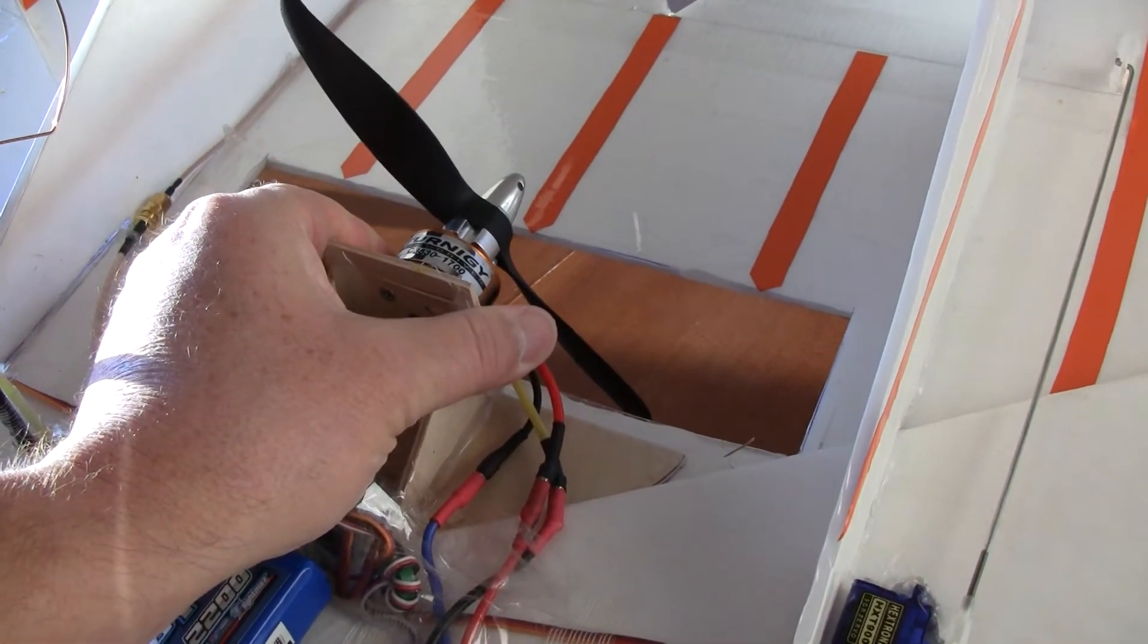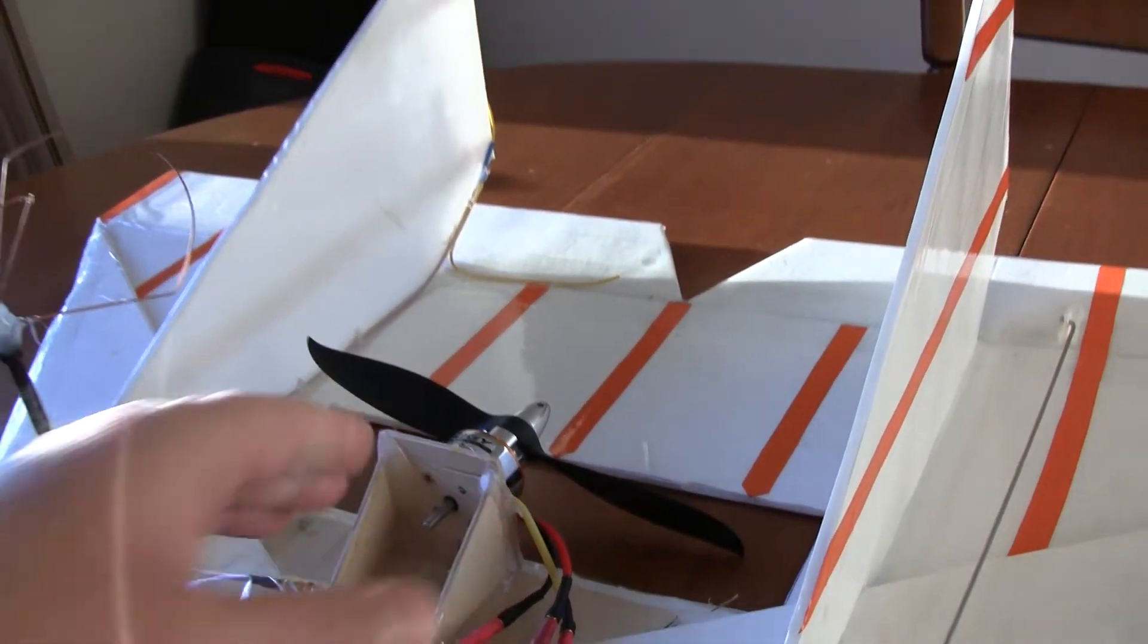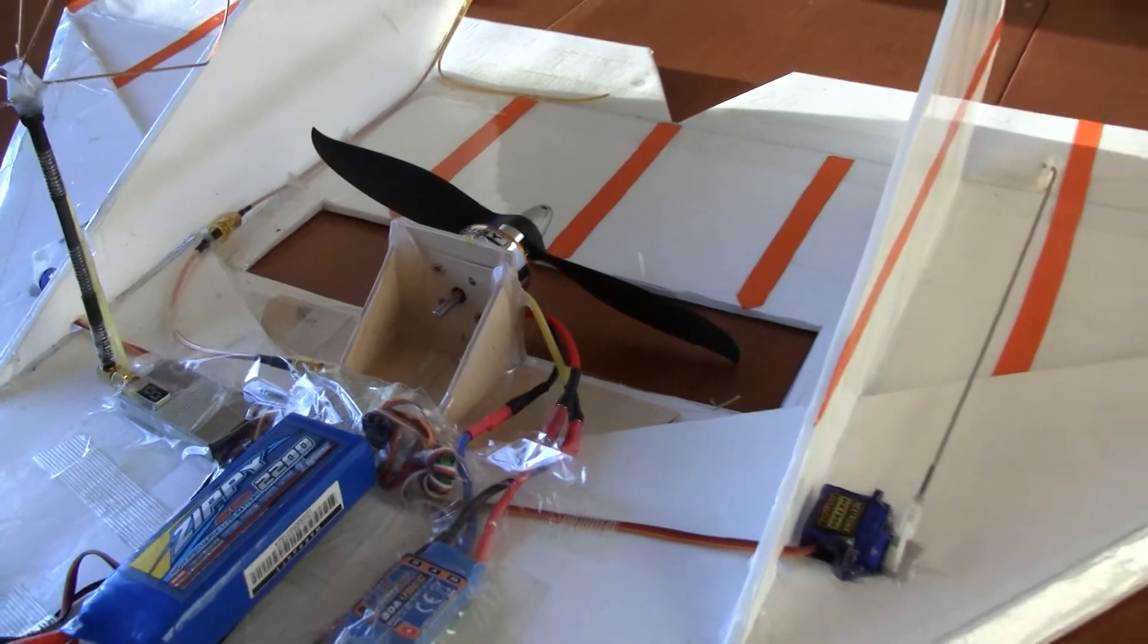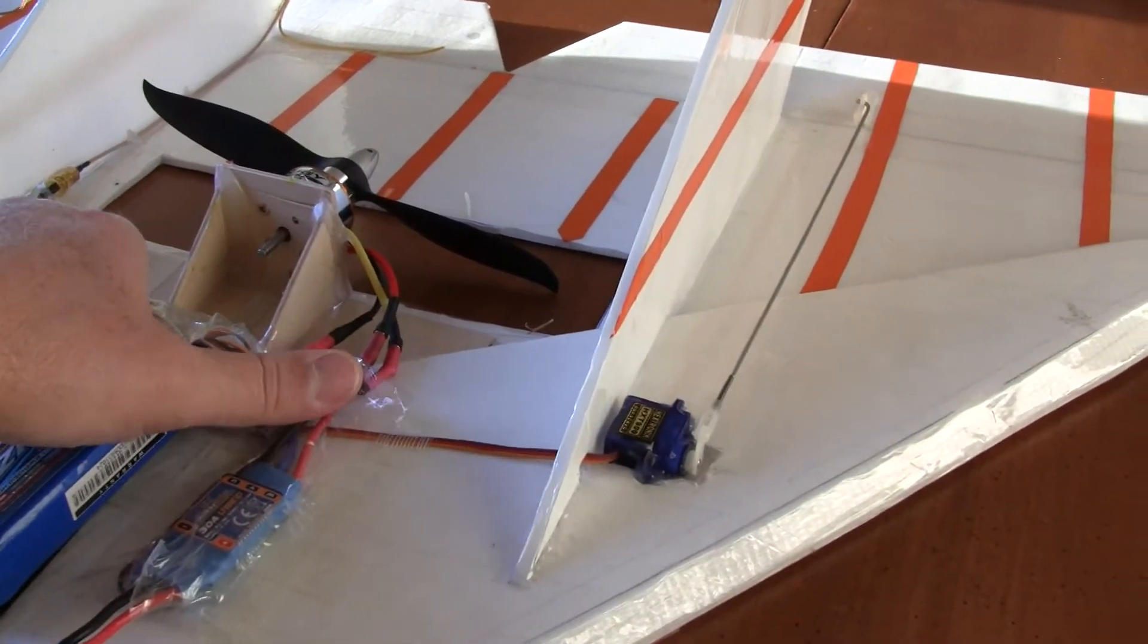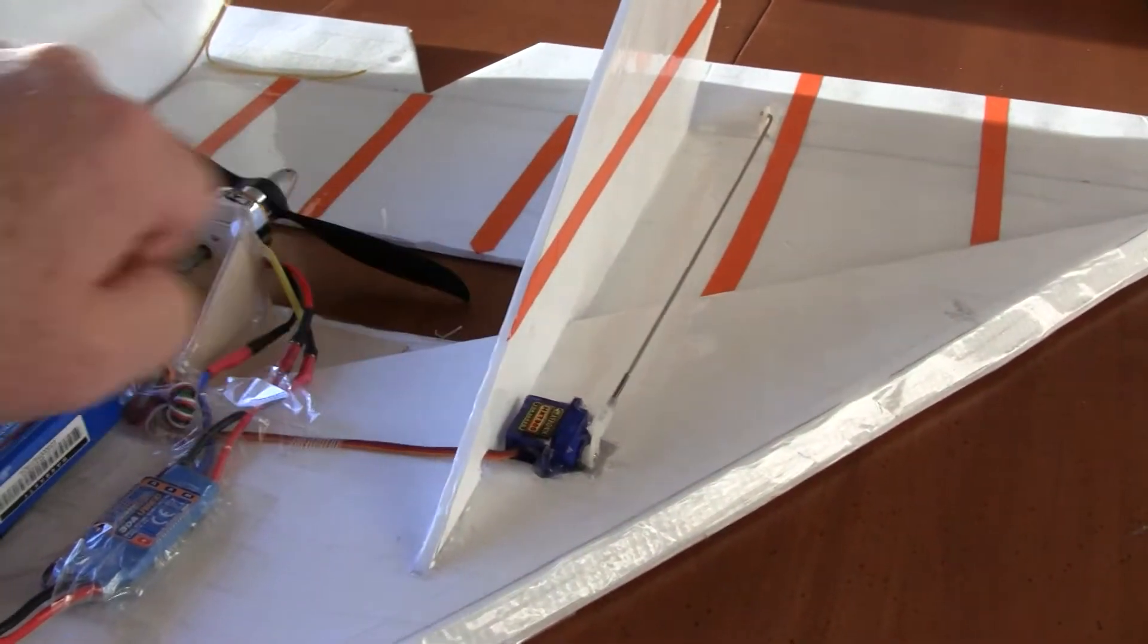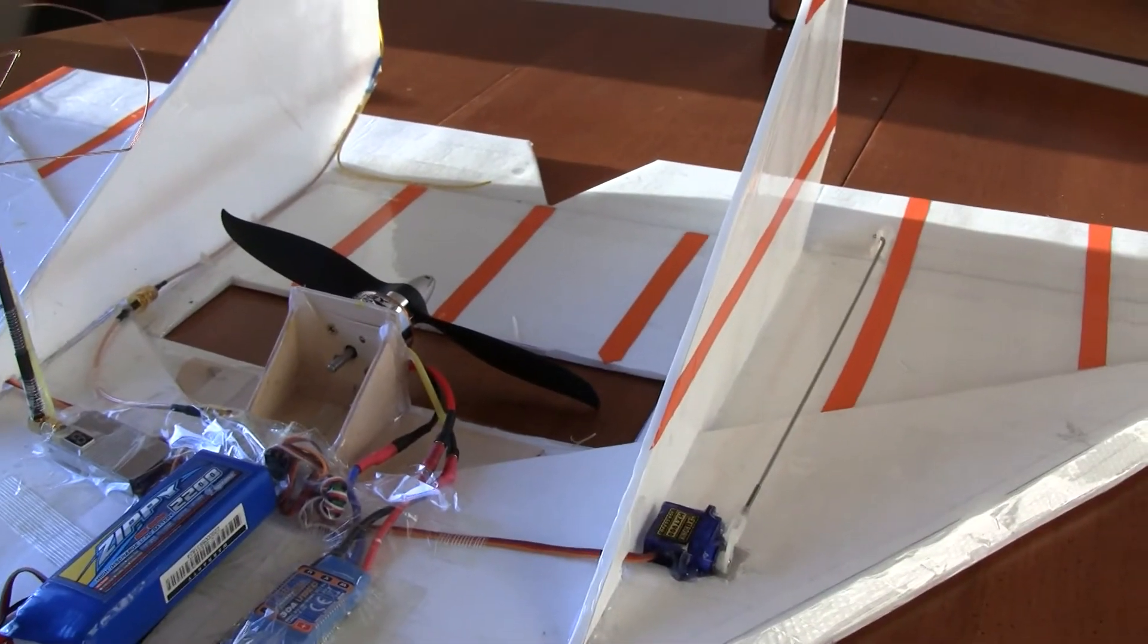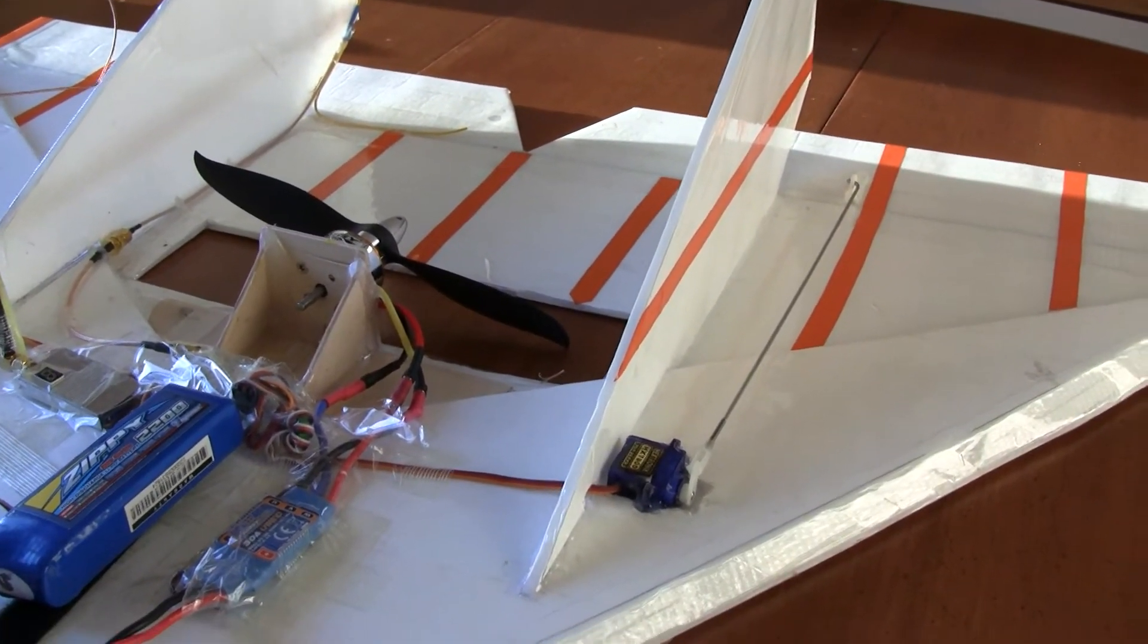The motor is a C3530 1700 kV motor with an 8-5 prop. You can run whatever you want, you don't want to get too big. I wouldn't suggest probably anything more than a 10 inch prop. It starts really cutting into the airframe of the airplane.